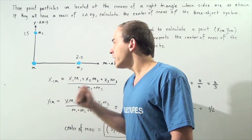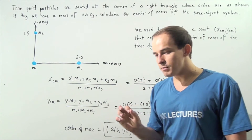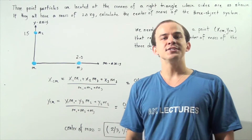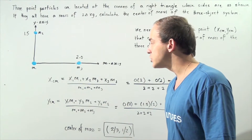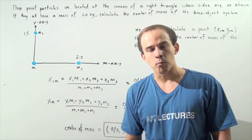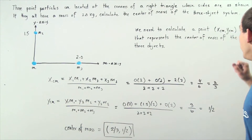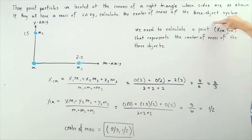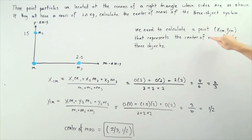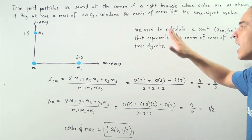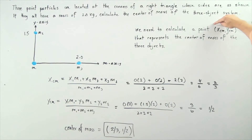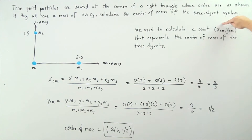Note that we are talking about a two-dimensional plane. That means when we calculate the center of mass of our system of three objects, we have to find both the X coordinate point and the Y coordinate point. We need to calculate a point with the notation X comma Y, where this entire point represents the location of the center of mass of our three-object system.